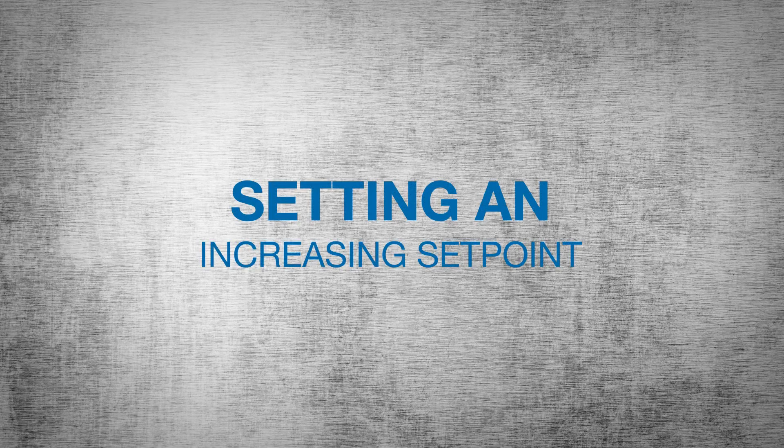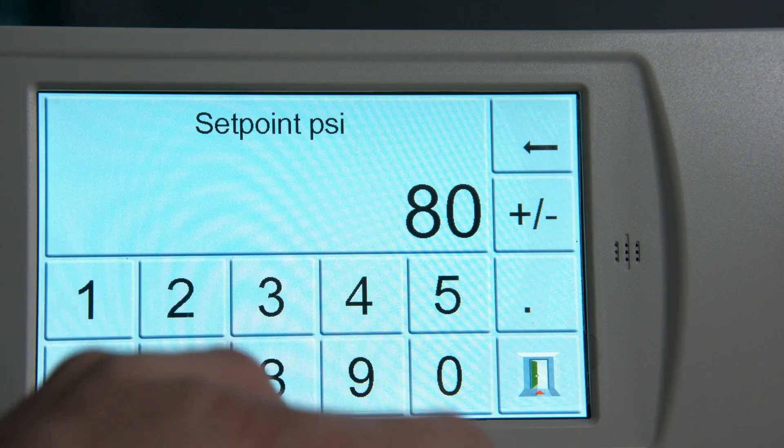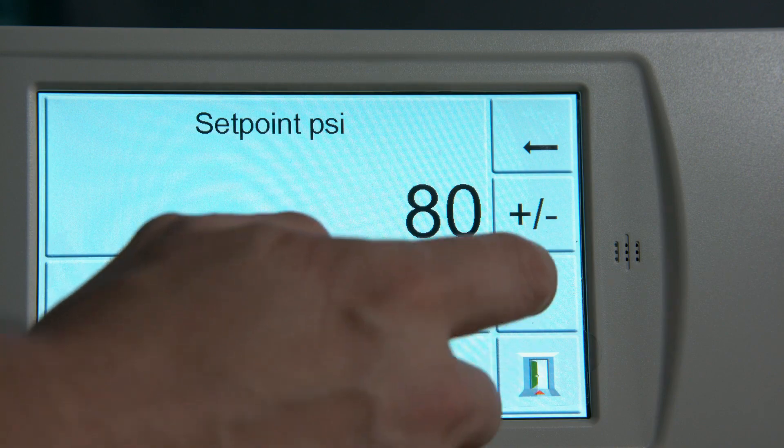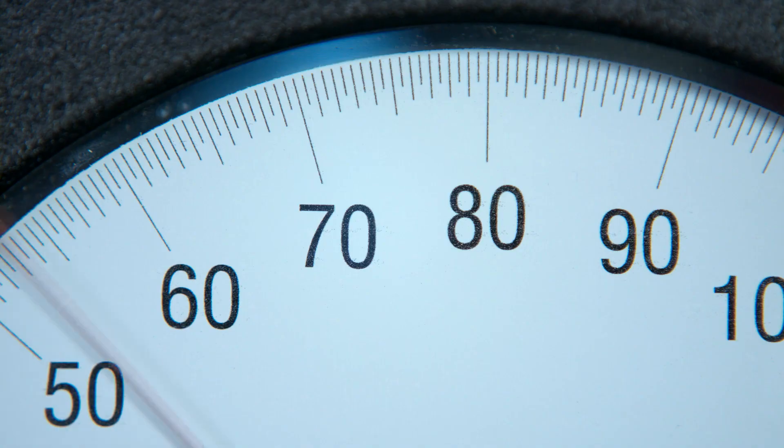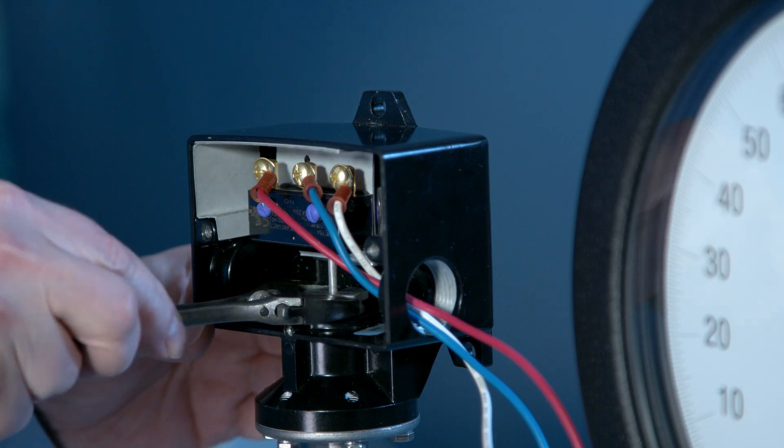Next, we're going to set this switch on an increasing set point for 80 PSI. The switch is not turned on at this point. Since it is not turned on, we're going to turn the nut counterclockwise to decrease the force on the spring and cause the switch to turn on.